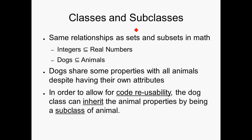We're going to talk about classes and subclasses first. Subclasses have the same relationship as sets and subsets in math. The integers are in the real numbers. Dogs are also animals, so dogs share some properties with all animals despite having attributes of their own. Inheritance, or having these subclasses, allows for code reusability. The dog class can inherit the animal properties by being a subclass of animal.